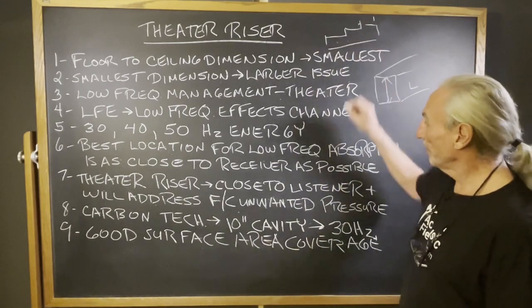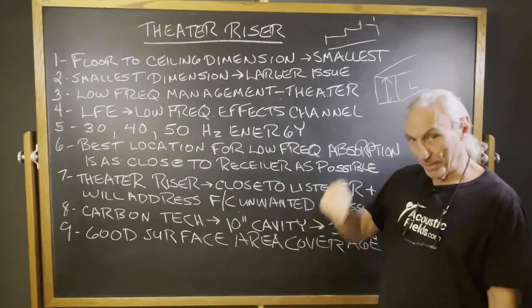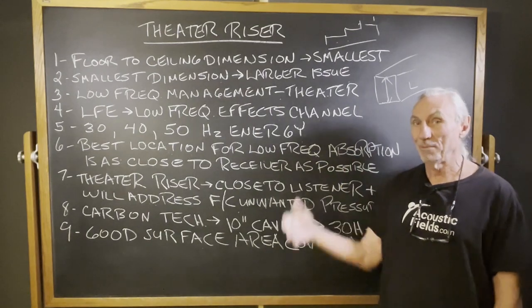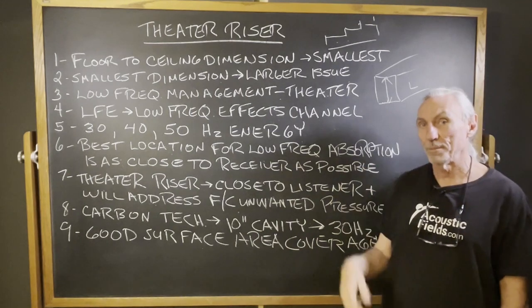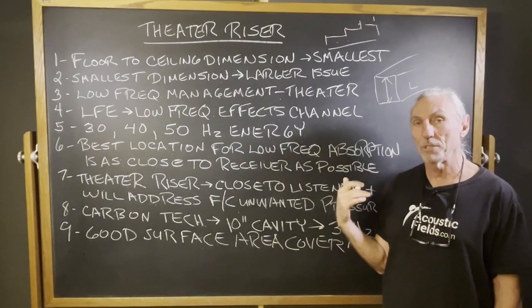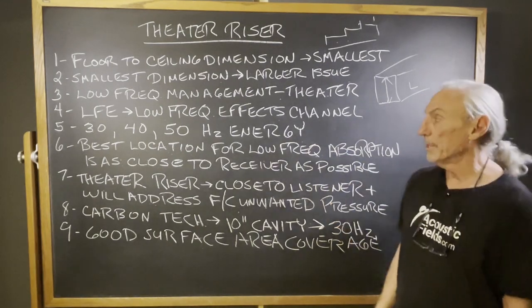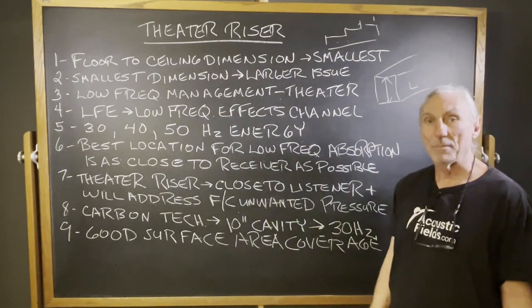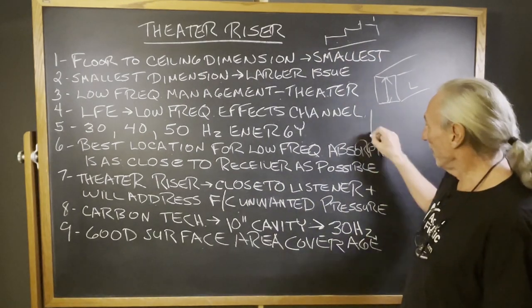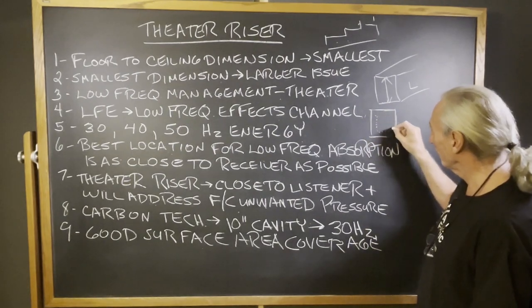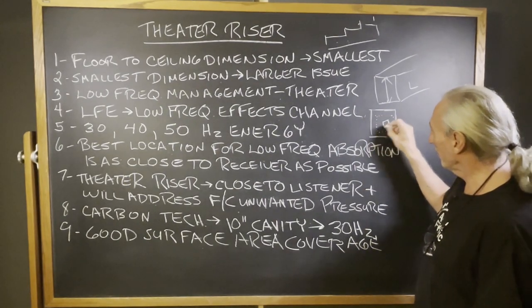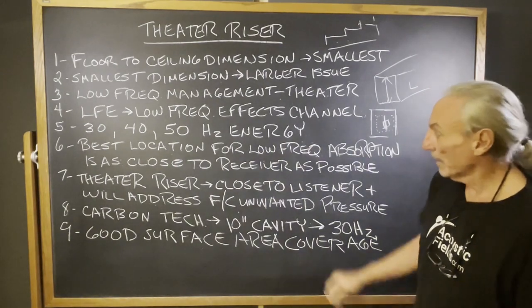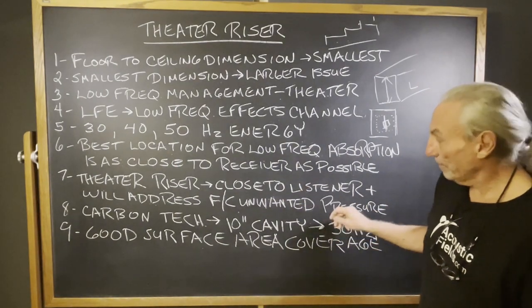But we have a riser, and the theater riser is close to the listener because you're sitting on top of it. The best place to put low frequency absorption is around the source and the receiver. Source is the subwoofer — we have our carbon technology all around our subwoofers in our new research facility, a multiple channel facility. In a theater, if you put it in the riser underneath your seats, you'll be in great shape. The square footage of those risers gives you a lot of horsepower in that floor-to-ceiling absorption dimension, and it's close to the listener, so it'll help with the pressure.